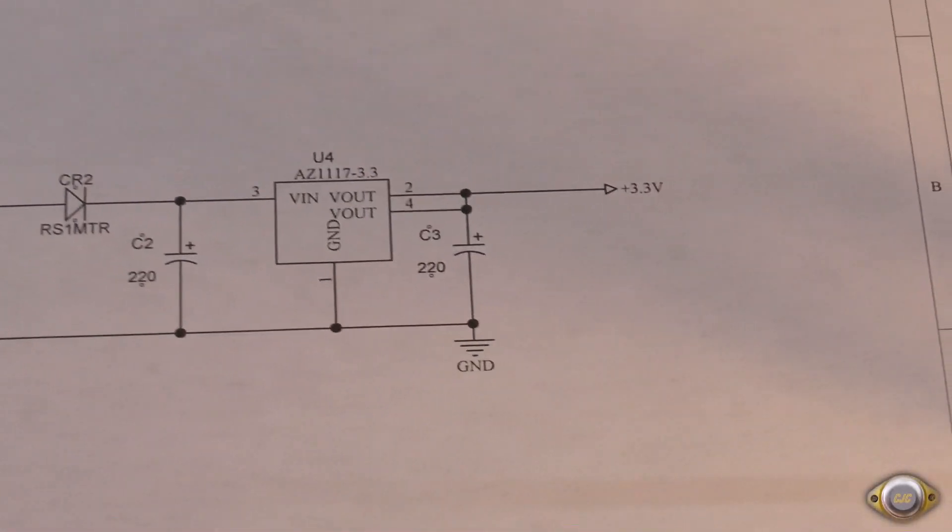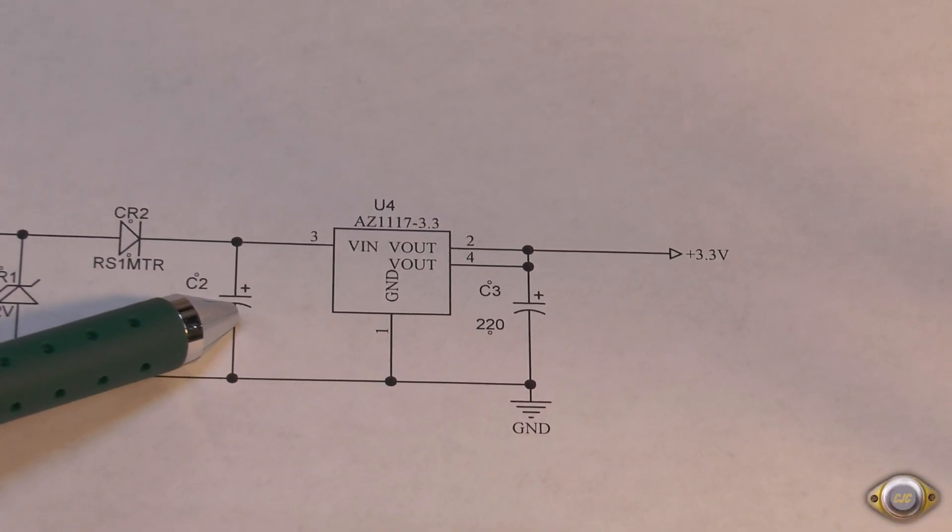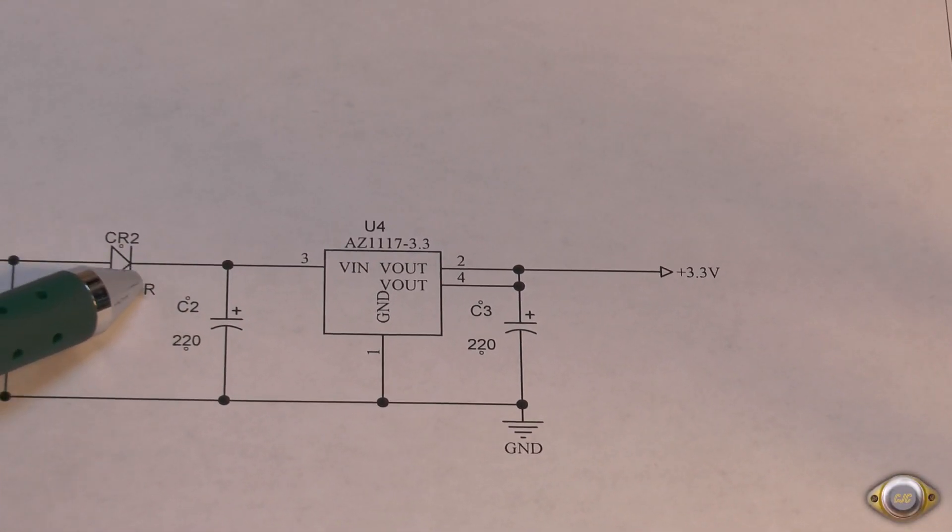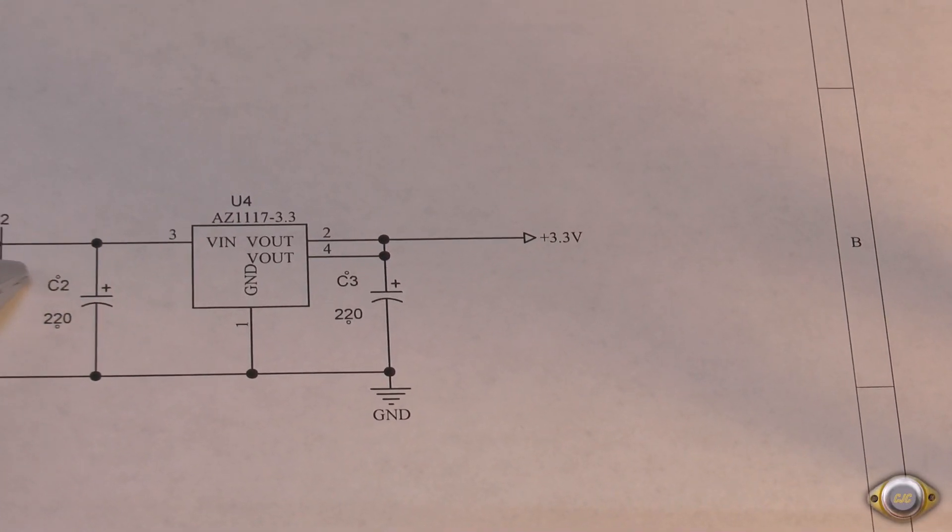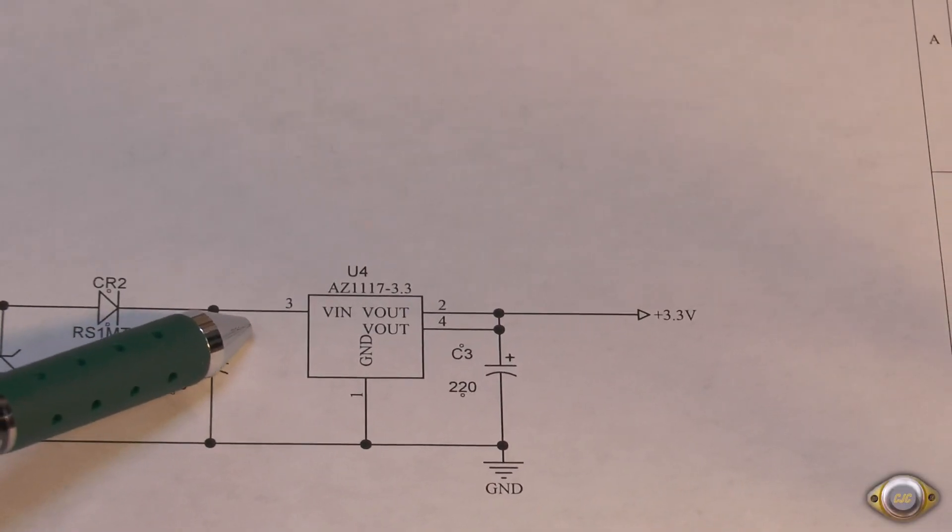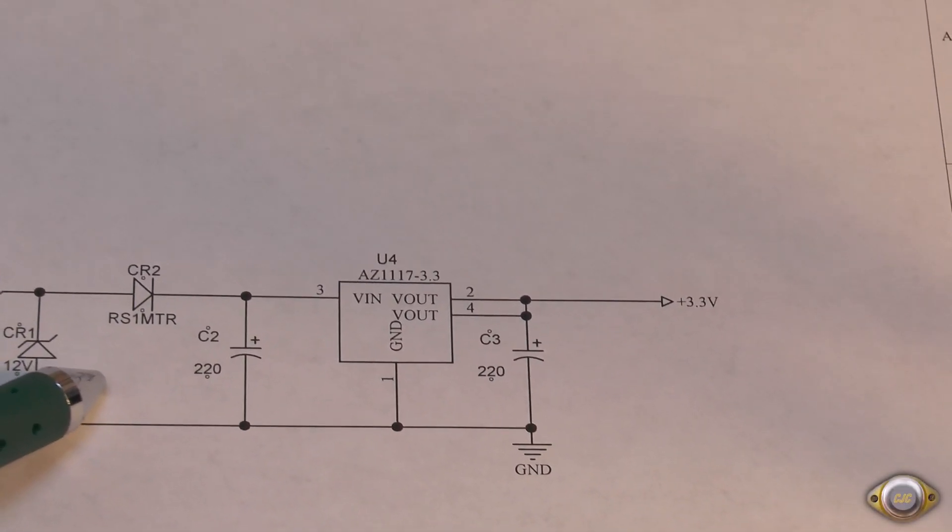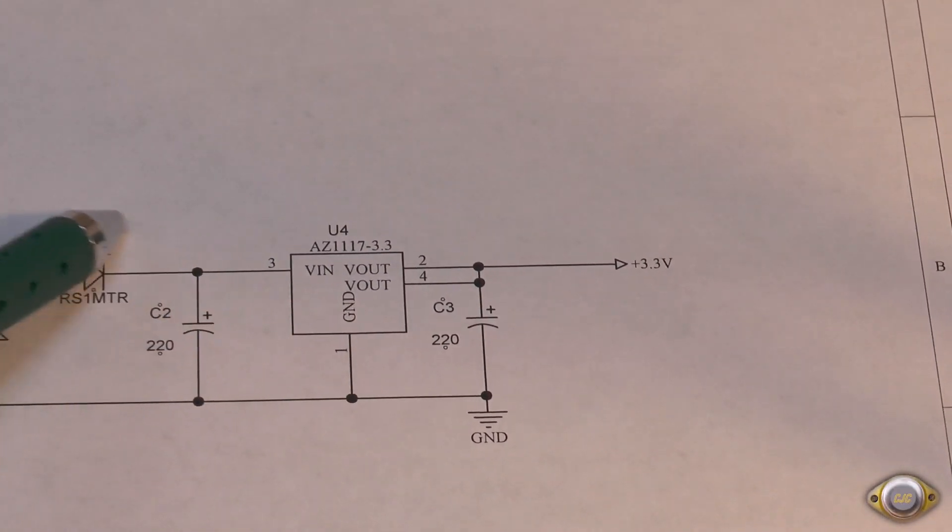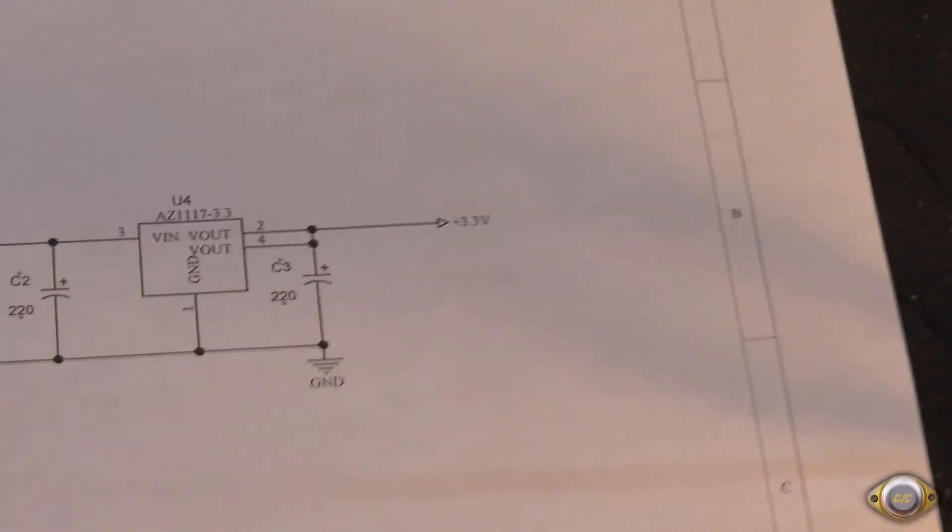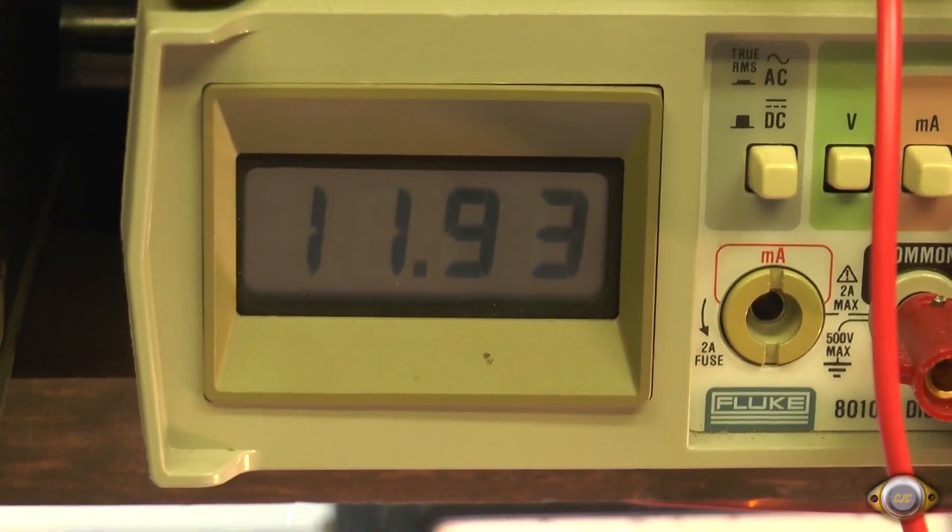By taking the regulator out, it's coming off this point here with the filter cap and the series diode. Just thought I'd try to see what the voltage and current would be here. There'll be more ripple of course. We don't have this regulator to drop some of the ripple down, but anyway it'll be an interesting test. Open circuit we're at 11.93 volts.